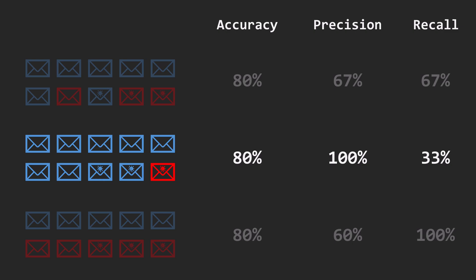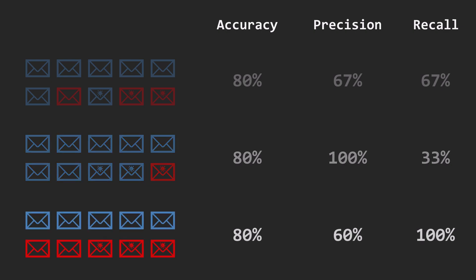But due to a low recall rate, many spam emails get through our detection system and land in our inbox. So, this model, when it detects spam, detects it perfectly without false positives, but does it quite rarely in general. And the third model detects all existing spam, which its 100% recall tells us, but it predicts spam so often that sometimes even regular mail lands in the spam folder.